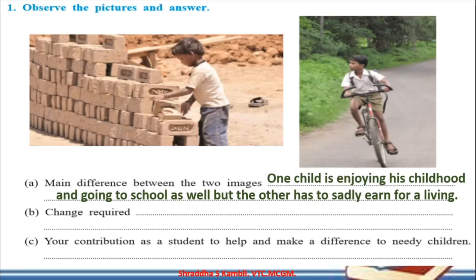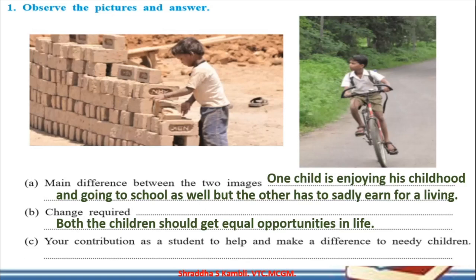In one picture, the child is enjoying his childhood and going to school — happily riding his bicycle on his way to school. In the other picture, the poor child has to sadly earn for a living at this tender age, perhaps because his parents are very poor and need him to earn. We want both children to get equal opportunities — to enjoy life, to play, to go to school, learn, and grow up as educated adults who are earning well and supporting their families.